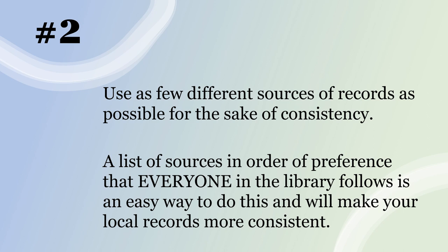Number two: use as few different sources of records as possible for the sake of consistency. There are thousands of places in the world where you could get cataloging records, and if everyone in your library gets them from different places or goes to a different source each time, your records are going to be very inconsistent. You should have a list of sources in order of preference that everyone in your library uses to get their copy cataloging. It'll make your records more consistent and make it easier for people to catalog.